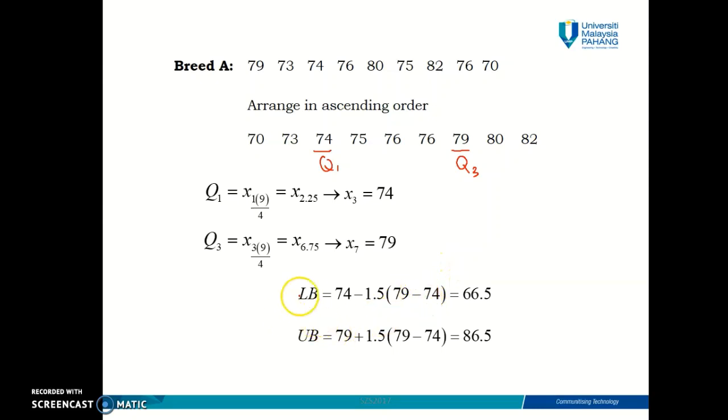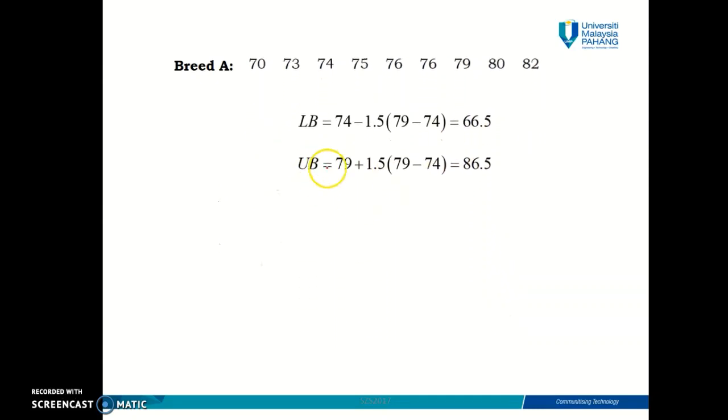And by using the formula shown in the previous slide, we calculate the lower boundary and upper boundary for breed A. Okay, then we get 66.5 and 86.5. So how do you decide whether or not there exists an outlier in this set? Now, let me draw a number line. So there it is. Okay, so your data starts from 70 up until 82. Okay, so what about the boundaries? So let's sketch the boundary. The lower boundary is 66.5, which is smaller than your data. And the upper boundary is 86.5, which is greater from your data.